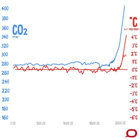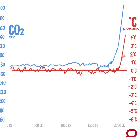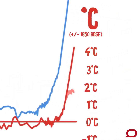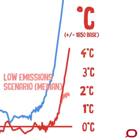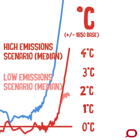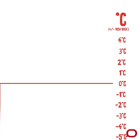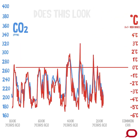On current projections, by 2100, our climate could warm by 4 degrees Celsius, even more, depending on our actions to cut CO2 levels. So, does this look natural to you?